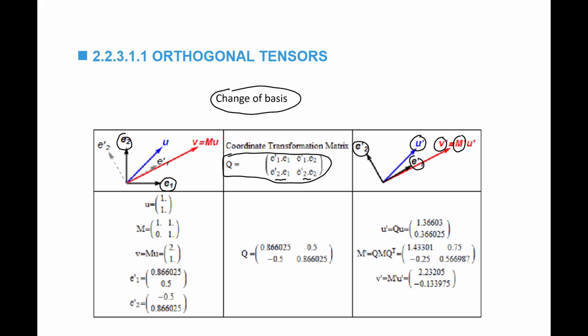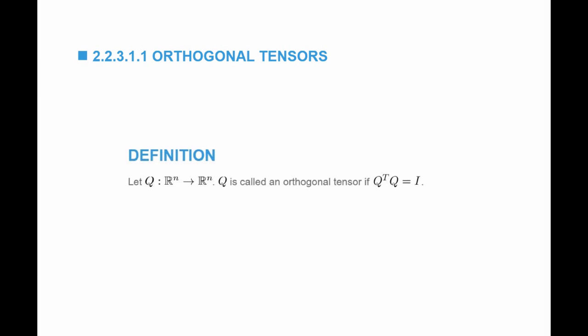We're going to start with the definition of orthogonal tensors. Orthogonal tensors are defined as linear maps from R^n to R^n that satisfy Q transpose Q equals I. The transpose of Q is actually its inverse, so Q transpose equals Q inverse.